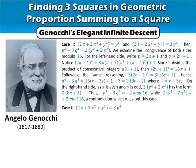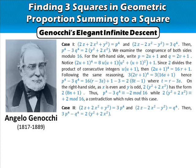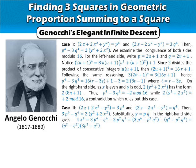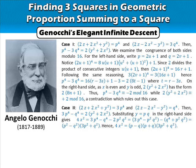Case 2: 2z + 2x² + y² = 3p⁴, and 2z - 2x² - y² = q⁴. Then 3p⁴ - q⁴ = 2(y² + 2x²). Substituting y = pq on the right-hand side gives 4x² = 3p⁴ - q⁴ - 2p²q², which can be factored as (p² - q²)(3p² + q²). Hence 4x² = (p - q)(p + q)(3p² + q²). Since the sum of the first two factors equals 4p², the greatest common factor is 4.